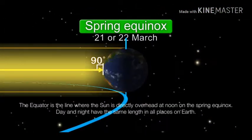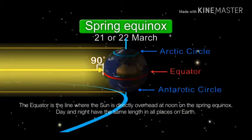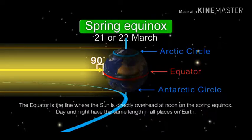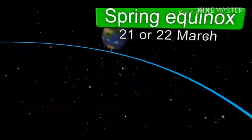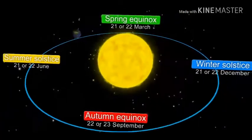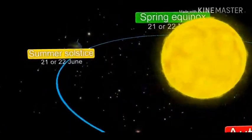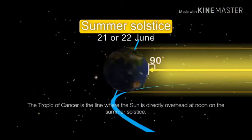The equator is the line where the Sun is directly overhead at noon on the spring equinox. Day and night have the same length at all places on the earth. The Tropic of Cancer is the line where the Sun is directly overhead at noon on the summer solstice.